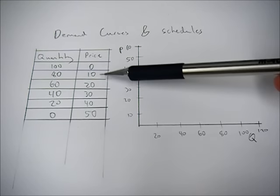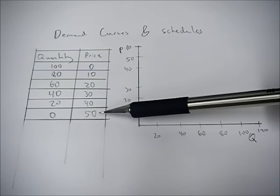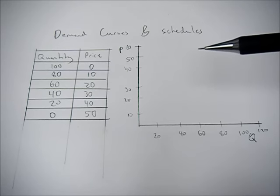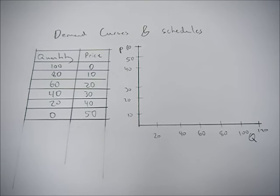If the price goes up to 20, we're only going to demand 60, and so on and so forth until we get to a price of 50, we demand nothing. So that price is just too expensive to us.